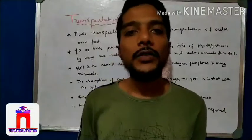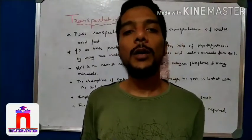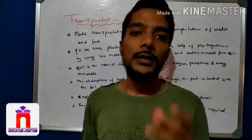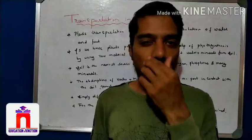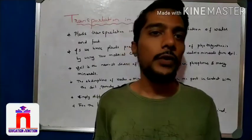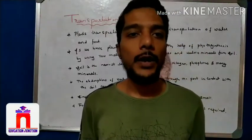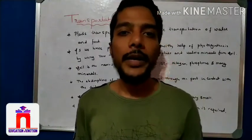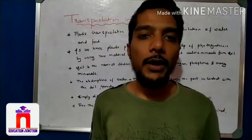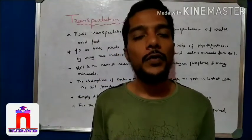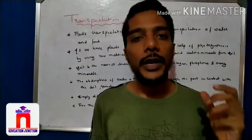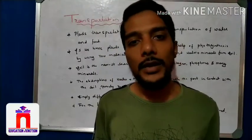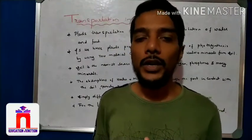Hi students, in this video we are trying to learn about transportation in plants. In the previous video, we know that plants prepare their own food with the help of photosynthesis. The plants require raw materials: carbon dioxide, water, and minerals. Carbon dioxide from the atmosphere is absorbed by the stomata, and water and minerals are obtained from the soil.